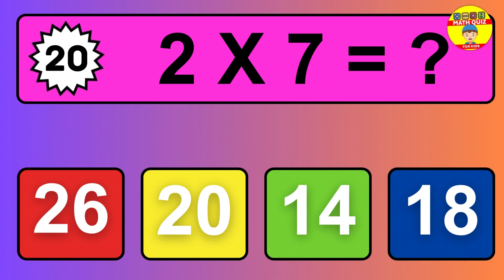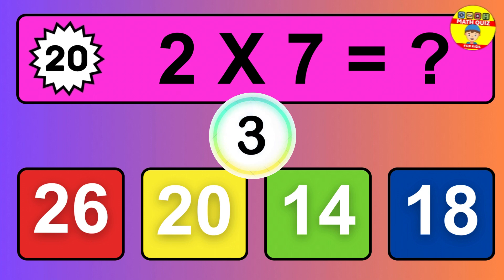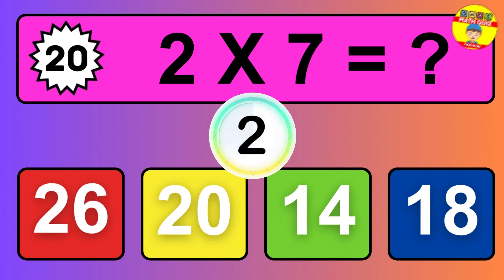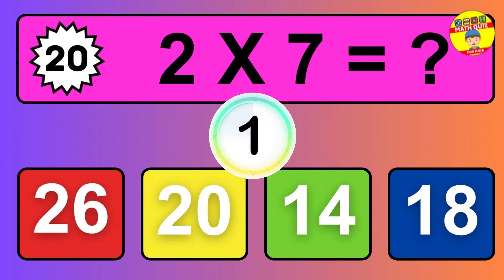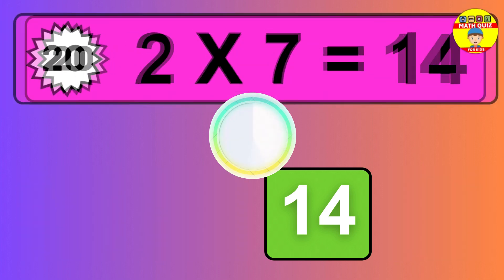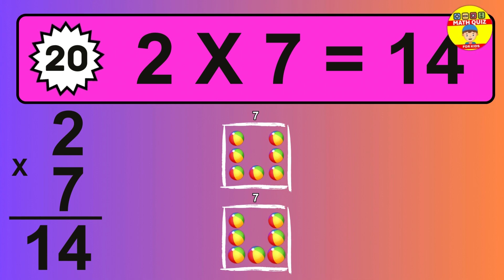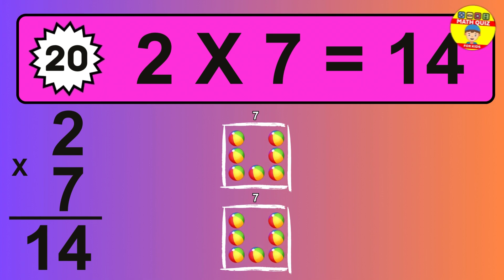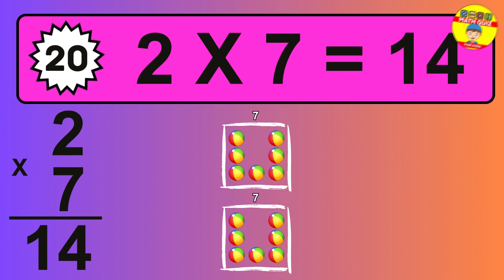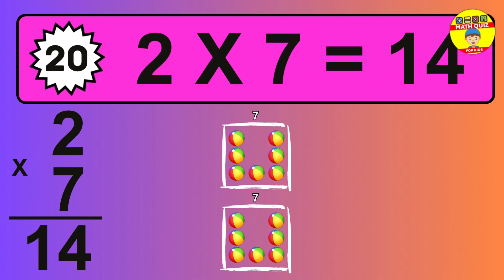Question twenty. Two times seven equals what? So the answer is two times seven is 14. To calculate, we have two groups with seven balls each one. So how many balls do we have?